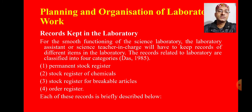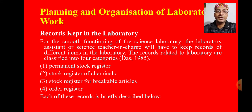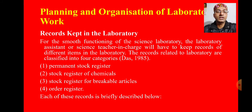When planning and organizing laboratory work, certain records must also be maintained. For the smooth functioning of the science laboratory, the laboratory assistant or science teacher in charge will have to keep records of different items. According to Das (1985), records related to the laboratory are classified into four categories: permanent stock register, stock register for chemicals, stock register for breakable articles, and order register.